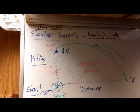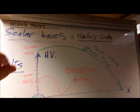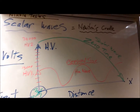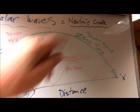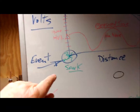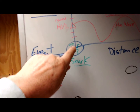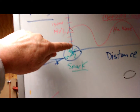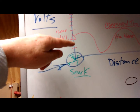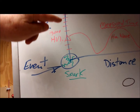Hi everybody, it's DC here under the heading 'Nikola Tesla Scalar Waves equals Newton's Cradle' — the comparison between scalar waves and Newton's Cradle. We've got an XY axis here, and this is the spark gap, which is what Nikola Tesla refers to as the event. This line represents high voltage, and up to a certain level of voltage you've got just Hertzian waves.